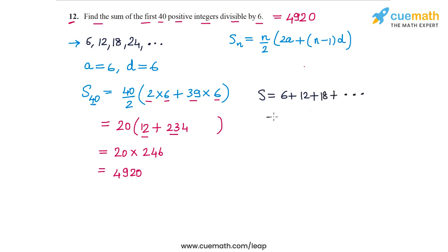What we can do is take out a common factor of 6. If we do that, we will get 6 times (1 + 2 + 3 and all the way up to 40). So 40 terms inside this bracket.